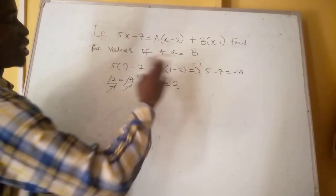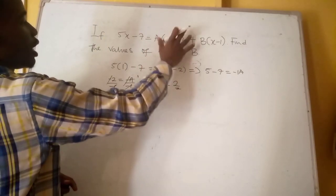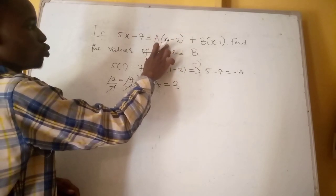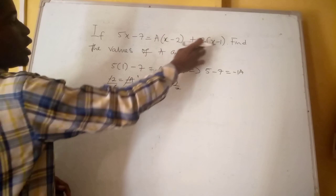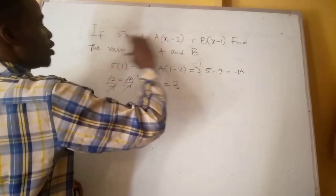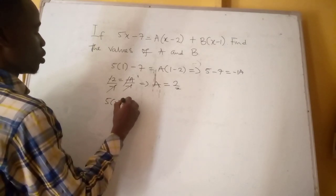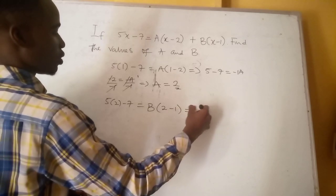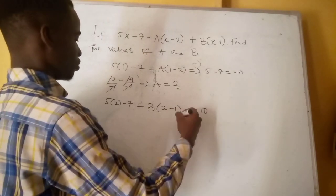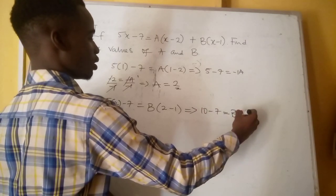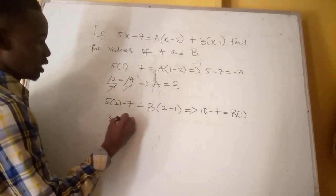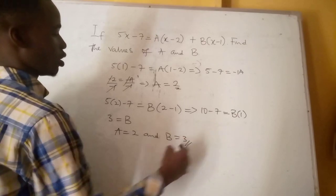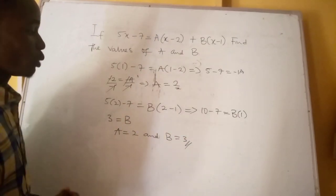Then we solve for b. We do the same thing — come to a, make a's bracket equal to 0. We have (x minus 2) here, so the additive inverse is plus 2. Substituting x = 2: 5(2) minus 7 = b(2 minus 1), giving us 10 minus 7 = b, so b = 3. At the end of the day, a = 2 and b = 3. You can try substituting to verify the answer.